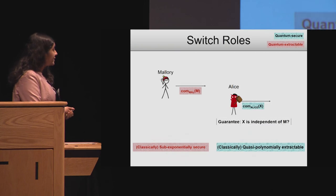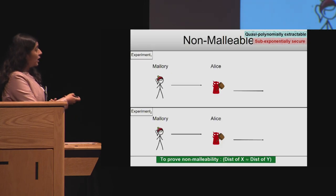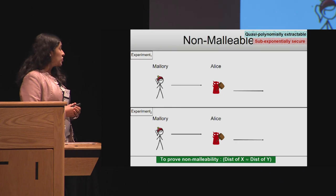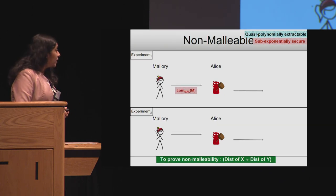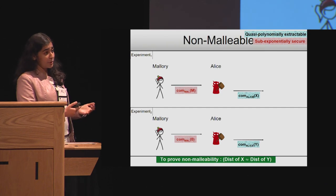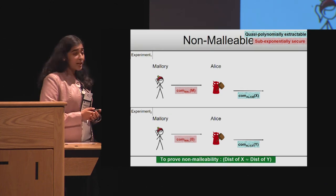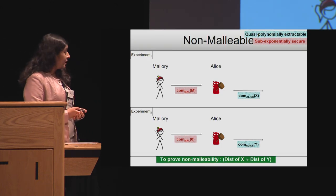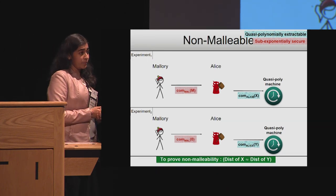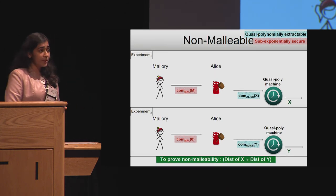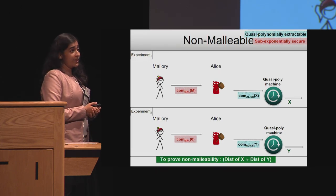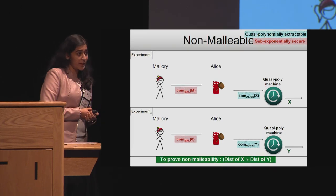Going back to analyzing non-malleability for the situation where Alice is malicious, we will see that again, given a transcript of this execution, there exists a quasi-polynomial time extractor that is able to look at this transcript and find out what x and y are. And if x and y were different in both games, then this would be a quasi-polynomial extractor that distinguishes experiment one from experiment two.